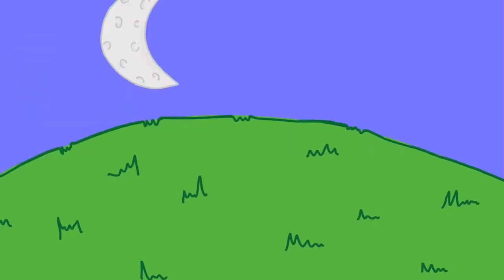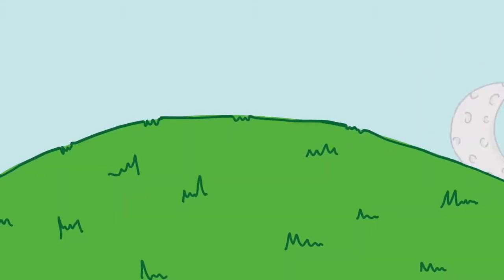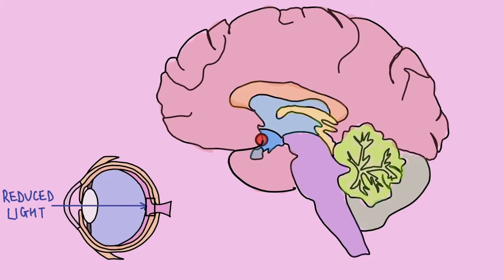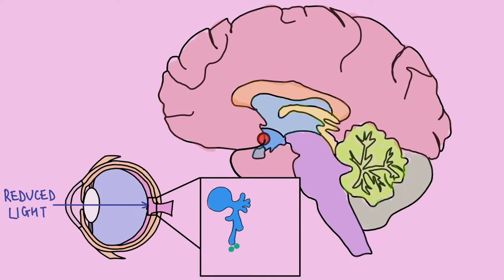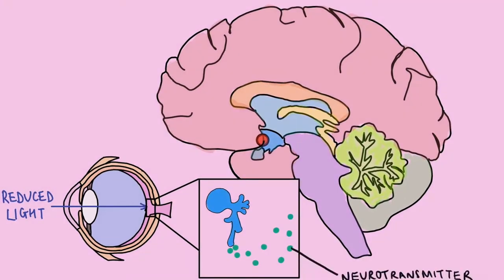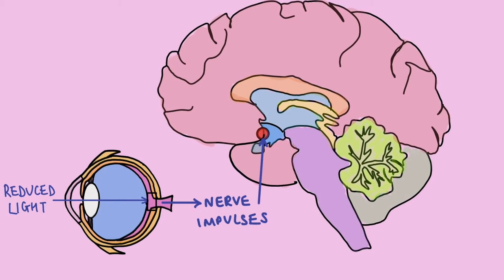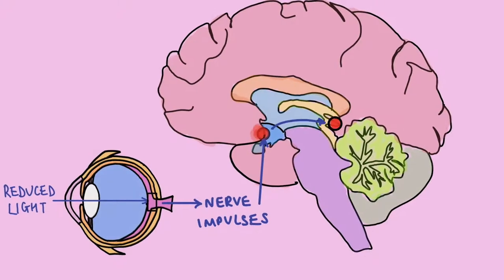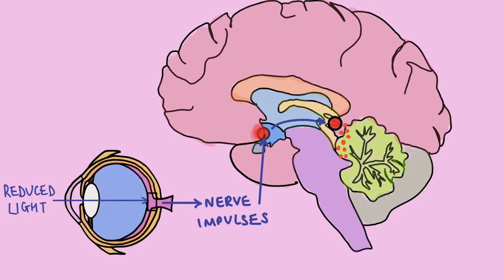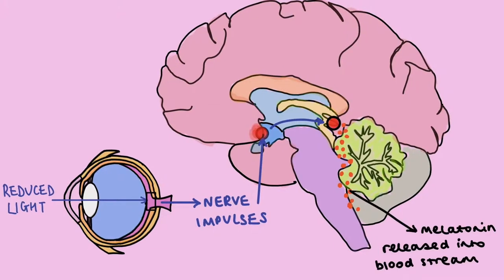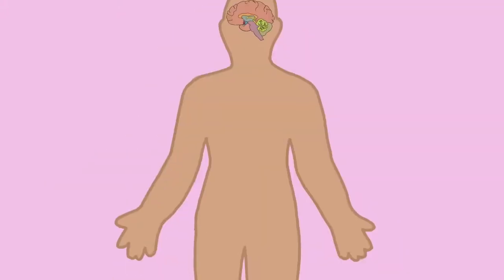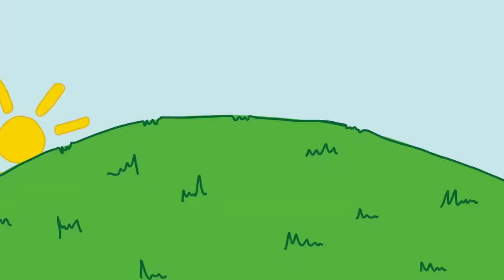At night when the environment is darker, the decrease in light is detected by photosensitive retinal ganglion cells. This causes the release of a signal molecule called neurotransmitter which produces nerve impulses that target the body's clock in the brain. This can signal to the pineal gland to release melatonin. Melatonin targets other smaller clocks around your body and signals to them to make you feel tired.